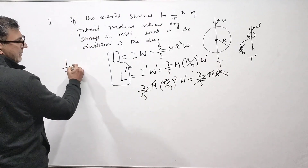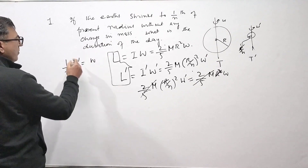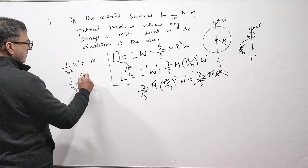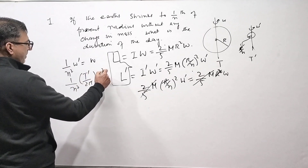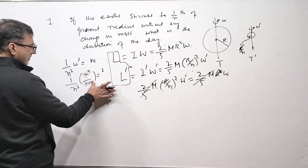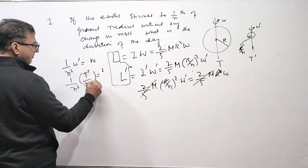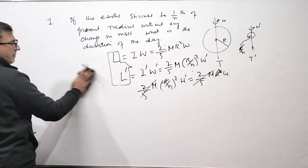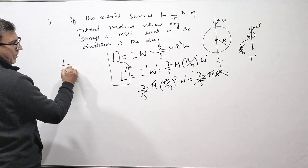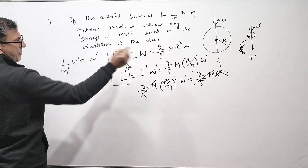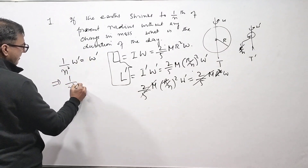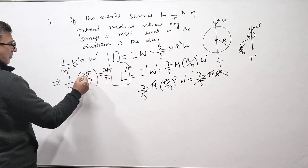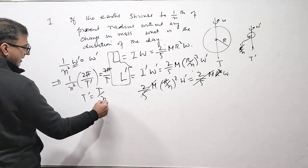From the conservation equation, (1/n²)ω' = ω. Since ω = 2π/T, substituting gives ω' = 2π/T'. After cancellation, T' = T/n². So the new time period of the Earth decreases by a factor of n². That is the answer for the new duration of the day.